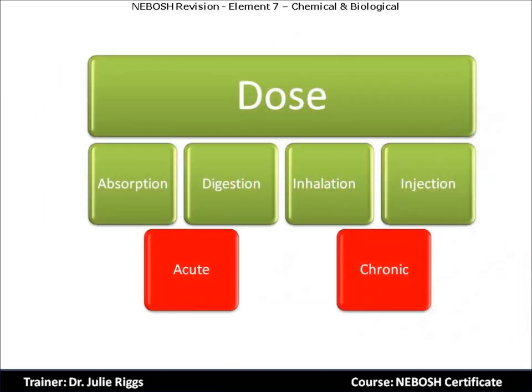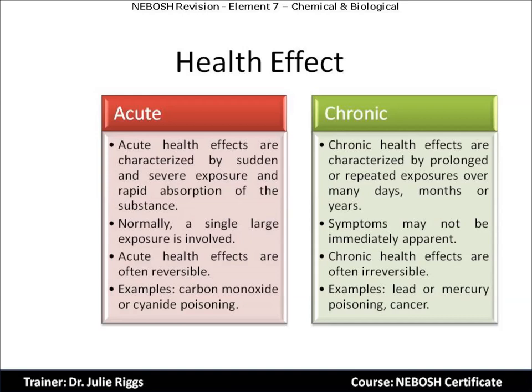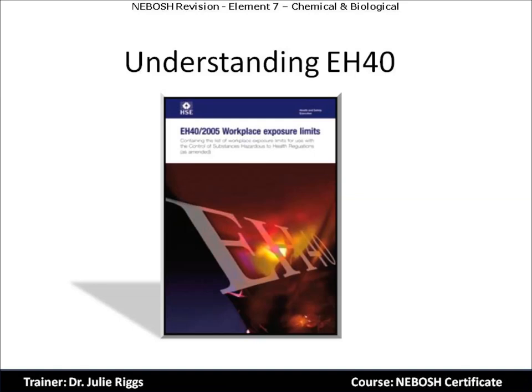On the final part of this model, let's look at acute and chronic exposure. Acute health effects are characterised by sudden and severe exposure and rapid absorption of the substance — normally a single large exposure. Acute health effects are often reversible. Examples include carbon monoxide or cyanide poisoning. Chronic health effects are characterised by prolonged or repetitive exposure over many days, months, or even years. Symptoms may not appear immediately — they may be latent. Chronic health effects are often irreversible. Examples are lead or mercury poisoning, or indeed cancer.